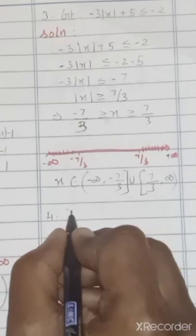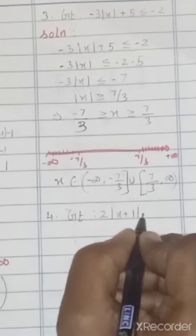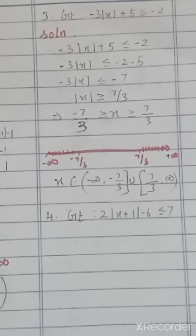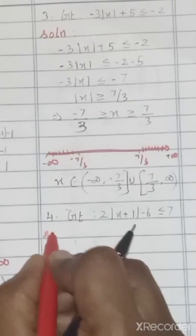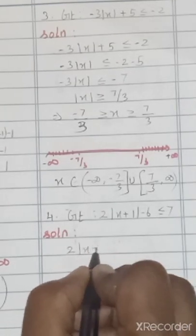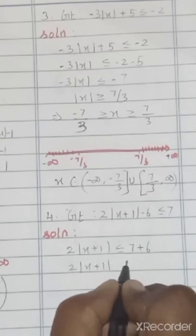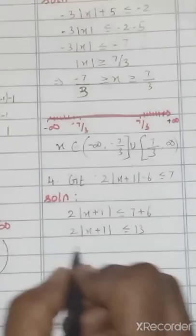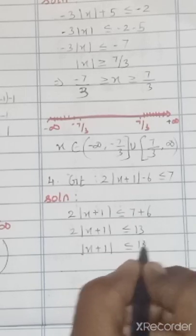Fourth question: 2|x + 1| − 6 ≤ 7. First, take minus 6 to that side: 2|x + 1| ≤ 7 + 6, so 2|x + 1| ≤ 13. Taking 2 to that side: |x + 1| ≤ 13/2.